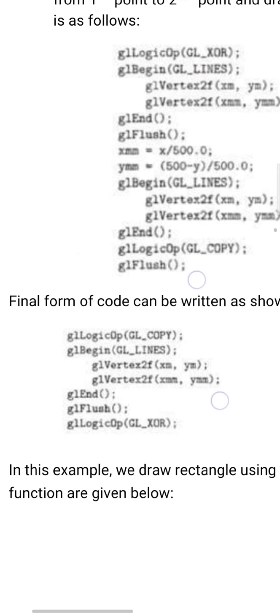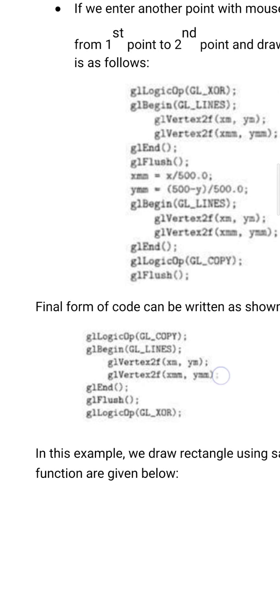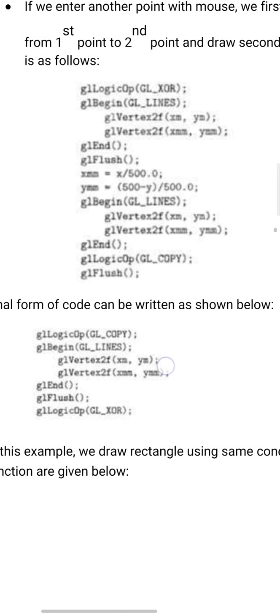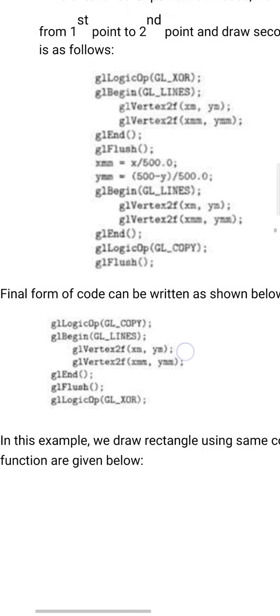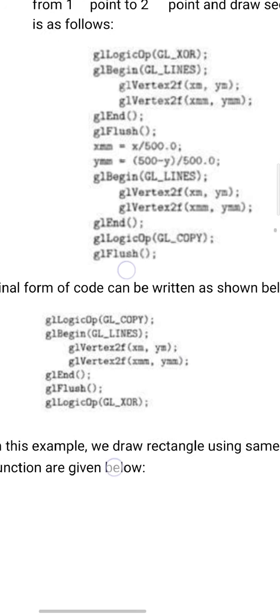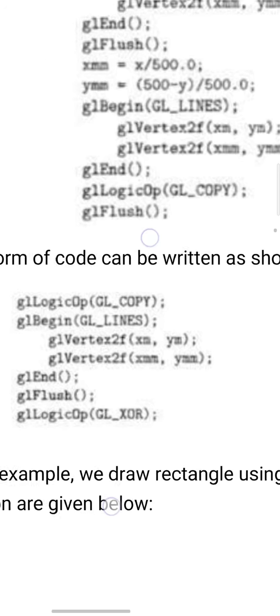Terminate with gl_end. For all other pixels, keep only the GL_COPY mode. This will be the final form of the code.